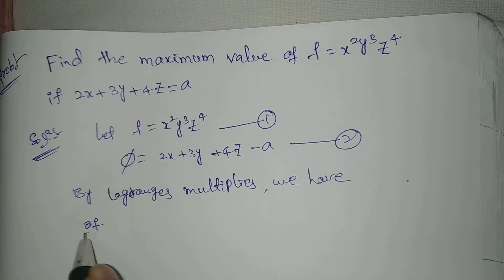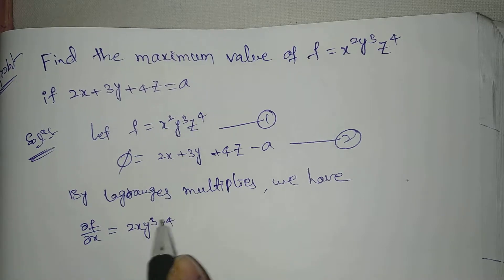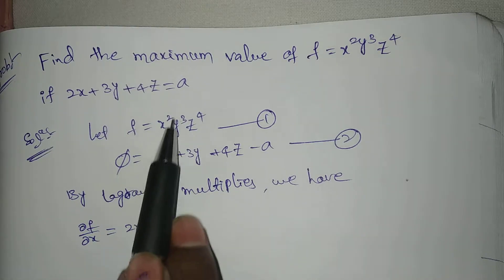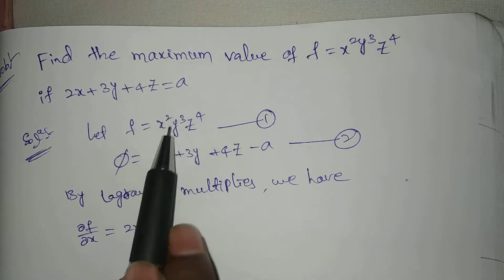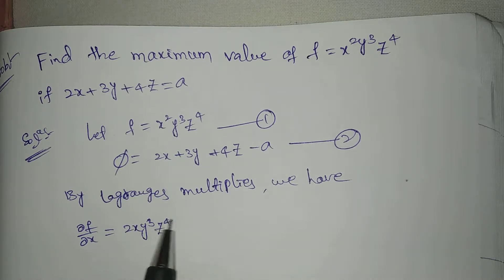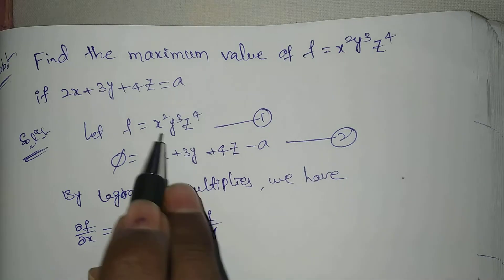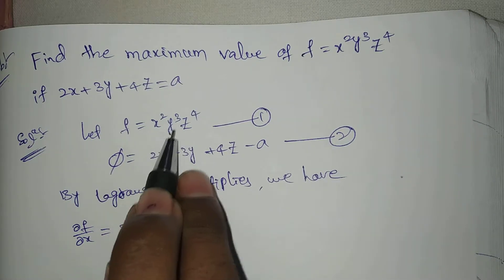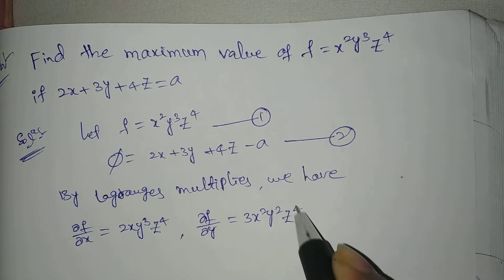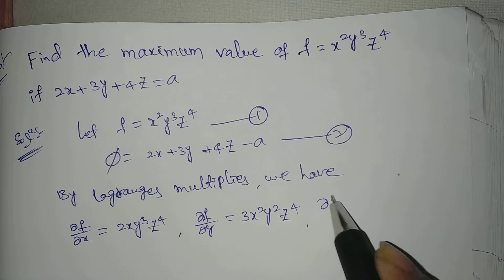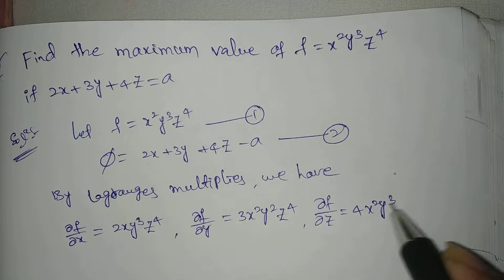By the method of Lagrange's multipliers, we compute the partial derivatives. What is ∂f/∂x? It is 2x y cubed z to the power 4, treating y cubed z to the power 4 as constant and differentiating x squared. And ∂f/∂y equals 3x squared y squared z to the power 4. And ∂f/∂z equals 4x squared y cubed z cubed.